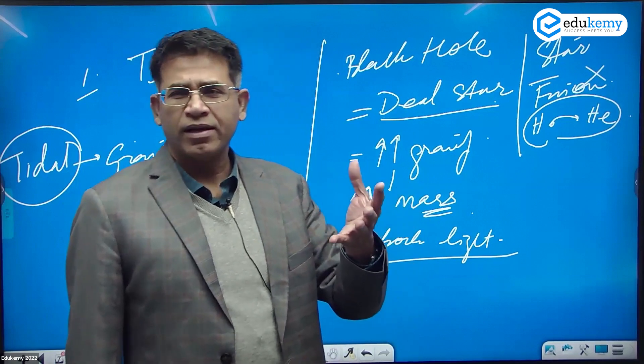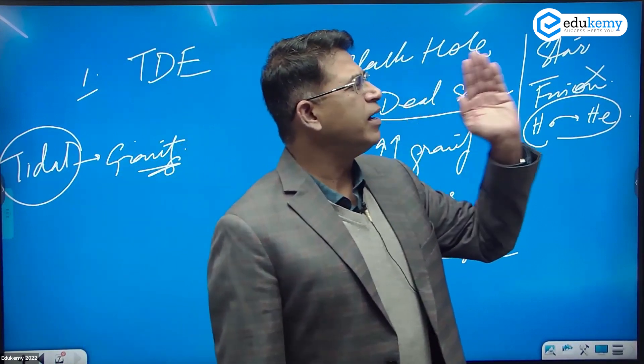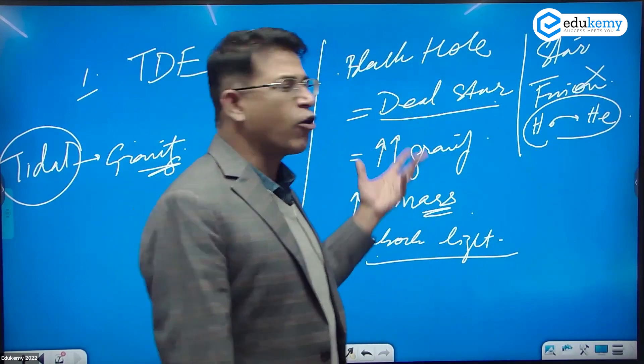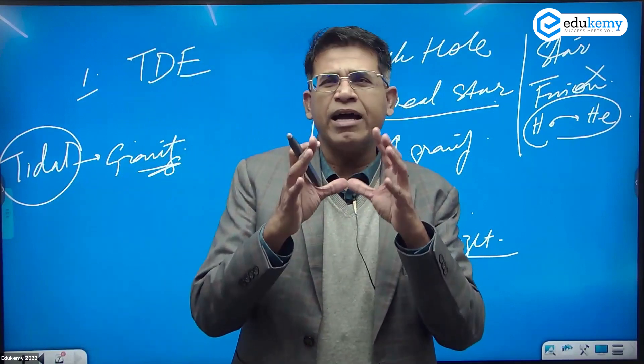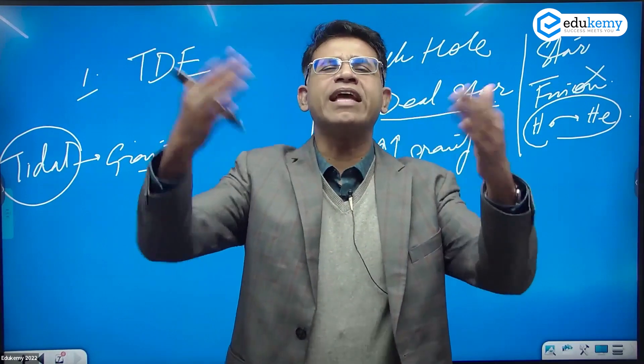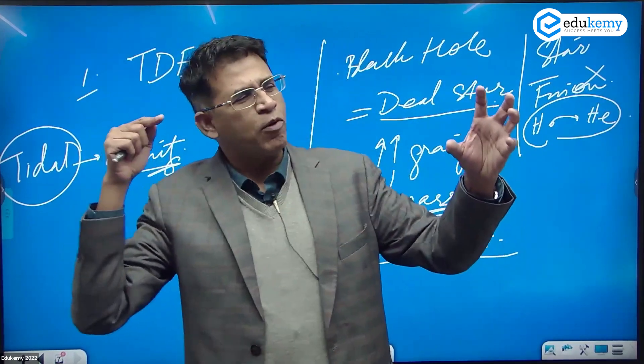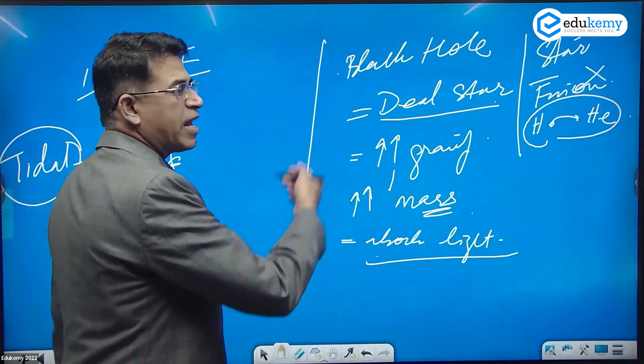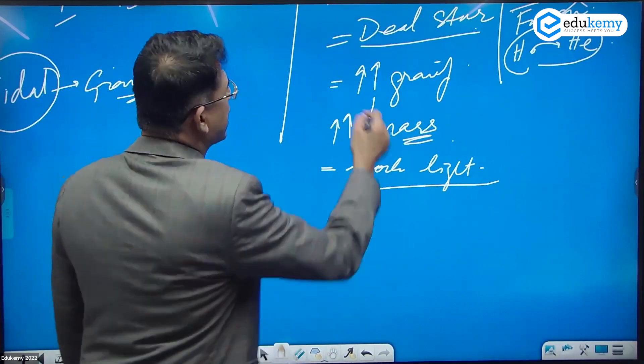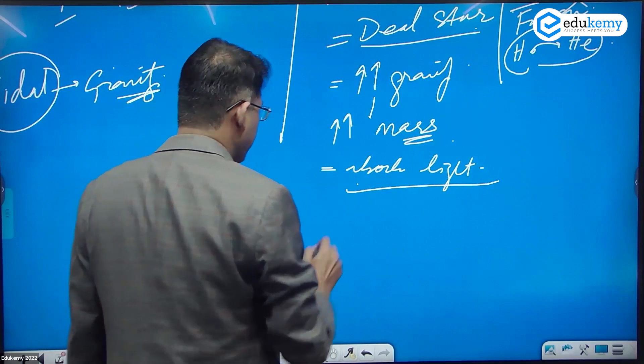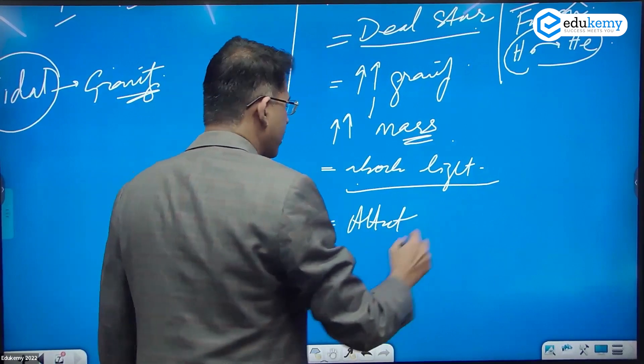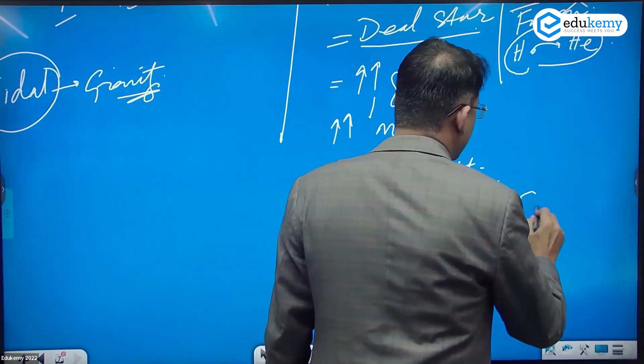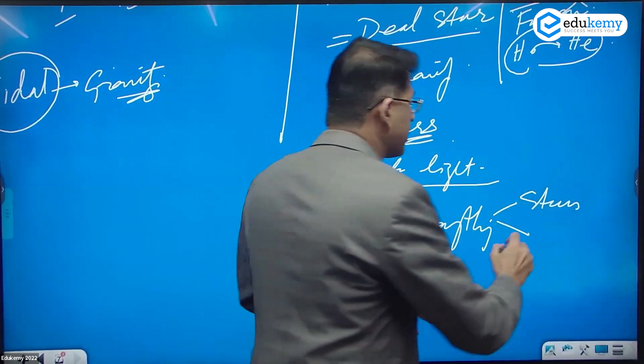This high gravity absorbs light. Light cannot escape the black hole, and that's the reason why you cannot see it. You can see something only if it's emitting light or if light reflects from there. The black hole has no fusion reaction, so there's no light getting emitted. If you put light, the light does not reflect back either.